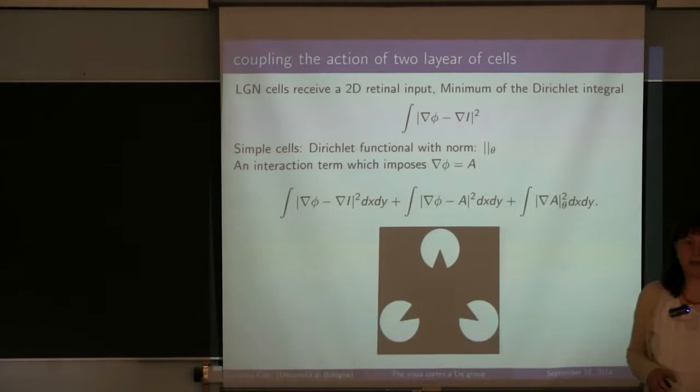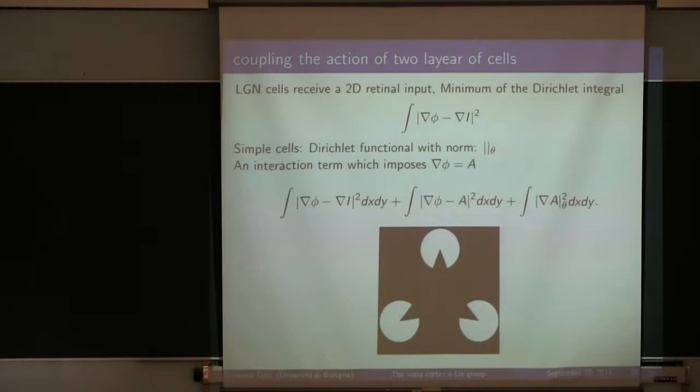Now we have studied two layers of the cortex, the LGN and the simple cells. We can try to see if we can put them together, because we had a minimum of the Dirichlet integral for the LGN cells, for the cells responsible for contrast, and for the simple cells we had minimum of the Dirichlet function associated to this node.